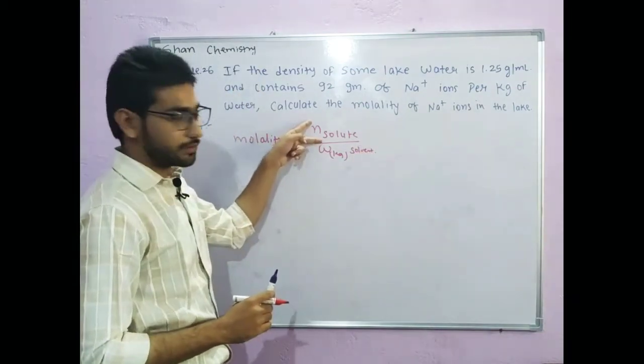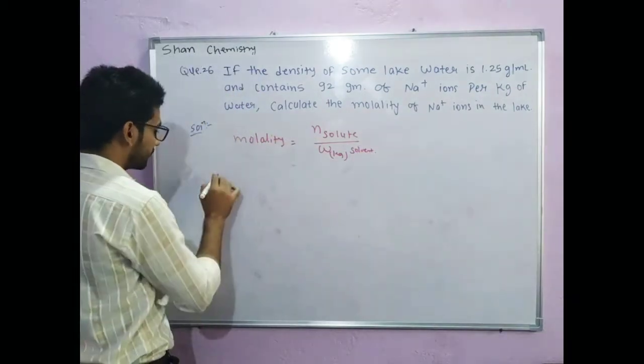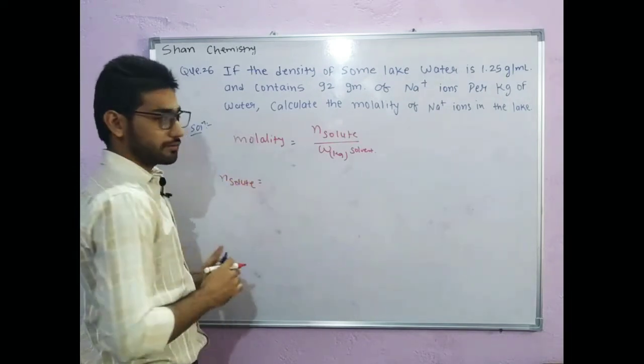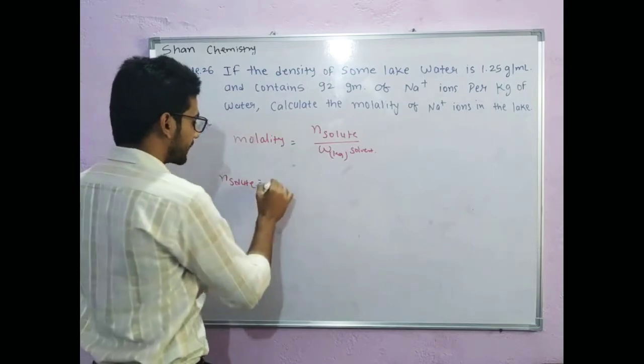First of all, we should calculate number of moles of solute. So number of moles of solute equals given mass upon molar mass. Given mass, how much is solute?